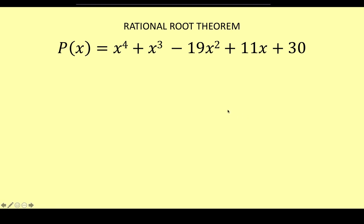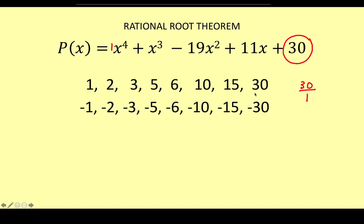The next theorem is the Rational Root Theorem. It states that the possible rational roots of a polynomial function are factors of the ratio of the constant term to the leading coefficient — in this case, factors of 30 over 1. All possible factors of 30 over 1 are listed here, giving a total of 16 possible rational roots. We are looking for four roots, but we have 16 possible candidates, so we need to narrow down the number of roots.